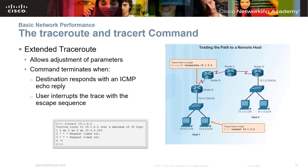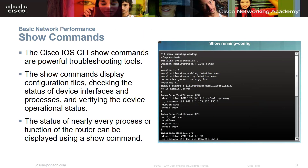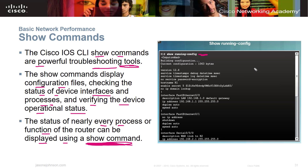The Cisco IOS command line interface show commands are powerful troubleshooting tools. You can gain a whole lot of information from your system using show commands — they display configuration files, check the status of device interfaces, show running processes, and verify device operational status, among many more. The status of nearly every process or function of a router can be displayed using a show command. There are some basic ones you really need to memorize for this course, like show running-config and show interfaces — you'll do those a lot.